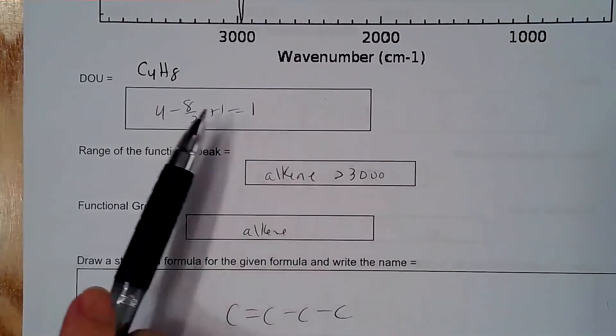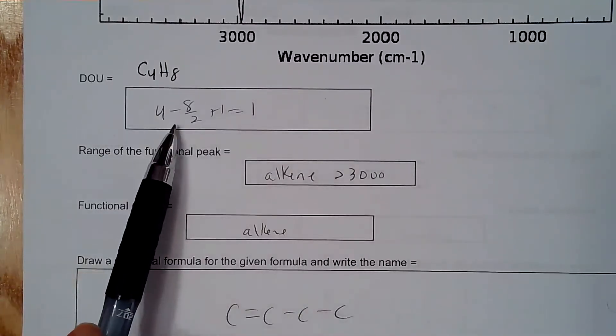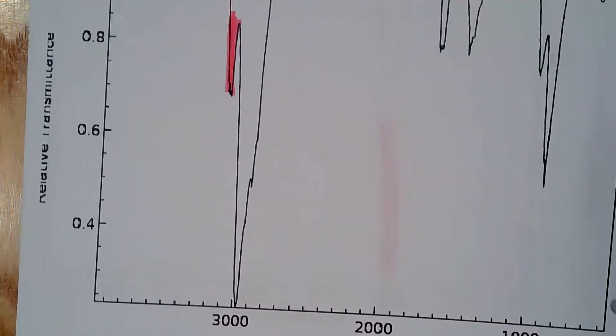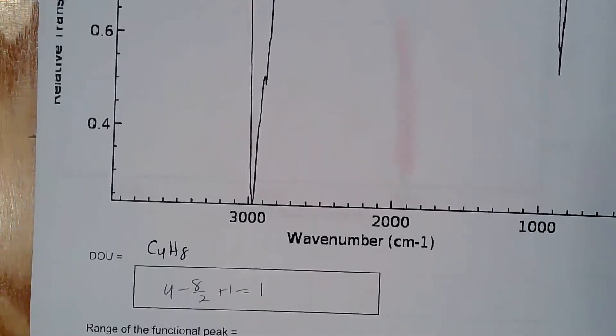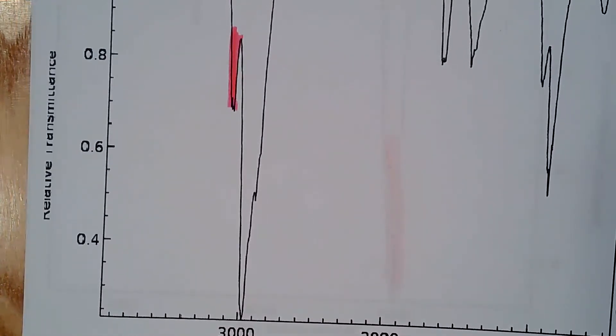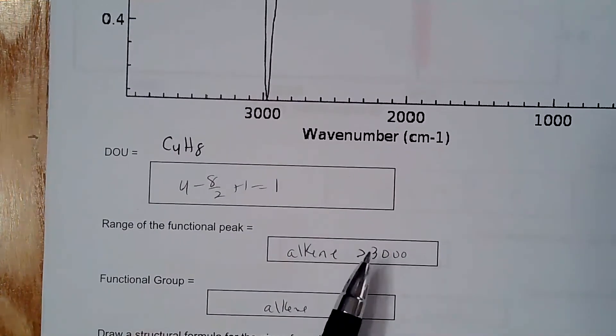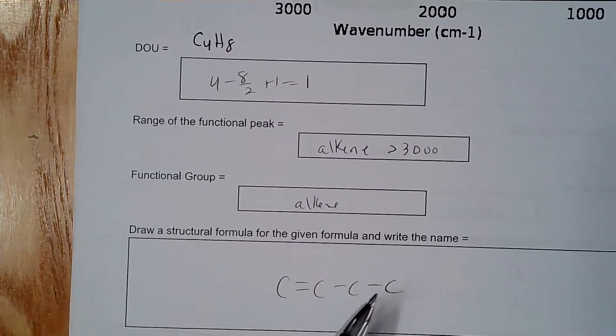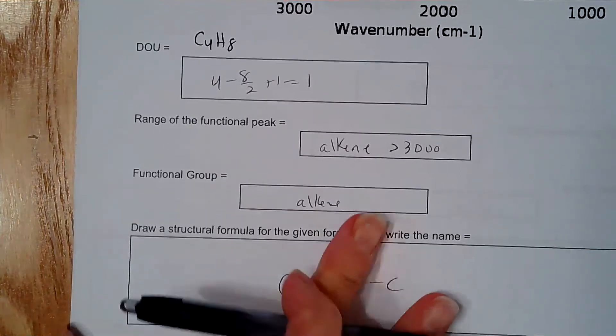So for number two, it is C4H8. Degree of unsaturation is 1. So looking at my IR here, I see that I have something past 3,000. So anything that is past 3,000, I know I have to have some kind of double bond and way past it will be a triple bond. So this is probably an alkene. And all I want you to do is to draw a double bond somewhere in that structure.